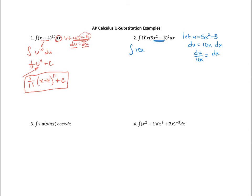We make our substitution: the 5x squared minus 3 becomes u squared, and dx becomes du over 10x. The 10x terms cancel out nicely, so we just have the integral of u squared du. Integrating gives 1 third u to the third plus c. Resubstituting, we get 1 third times 5x squared minus 3 to the third plus c as our final solution.